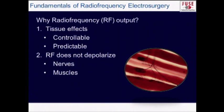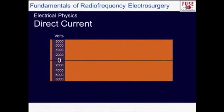Why do we use RF? RF is quite controllable and predictable as long as you understand what you're using. At above 100,000 Hz or 100 kHz, it doesn't depolarize nerves and doesn't depolarize muscle. That's why your patient doesn't go into cardiac arrest when this energy passes through them — it's a very interesting energy source in that regard.